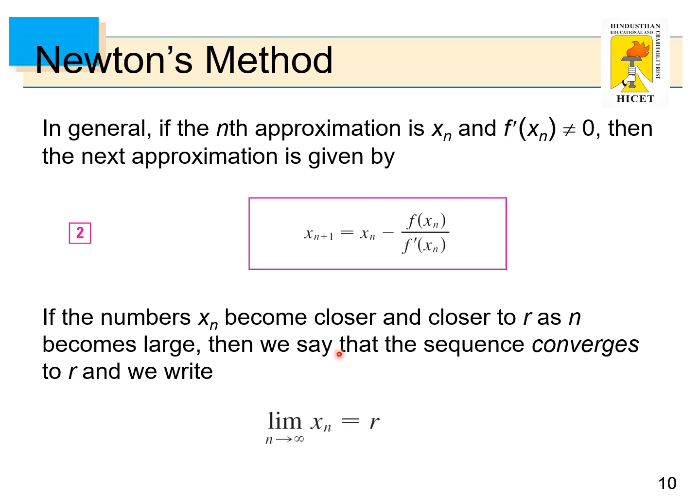If the numbers xn become closer and closer to r as n becomes large, then we say that the sequence converges to r and we write lim_{n→∞} xn = r.